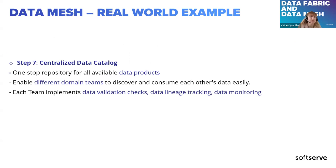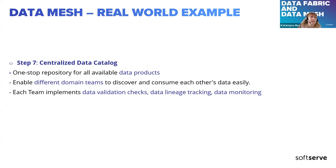As a final step for data mesh, we build a centralized data catalog — a one-stop repository for all available data products, where data products are our thematical data groups. This enables different domain teams to discover and consume each other's data, and also allows implementing data validation checks, data lineage tracking, and data monitoring on data coming from the catalog. This was actually the final slide — I hope you enjoyed the presentation. Are there any questions around data fabric or data mesh?